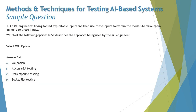The very first question from Chapter 9 is on your screen. The question says: an ML engineer is trying to find exploitable inputs and then use these inputs to retrain the model to make it immune to these inputs. We are trying to say that the engineer is finding data or inputs which can exploit the behavior of the ML model, and then letting the model know not to misbehave when it encounters these kinds of inputs — making the system more stabilized when wrong or exploitable data are used.